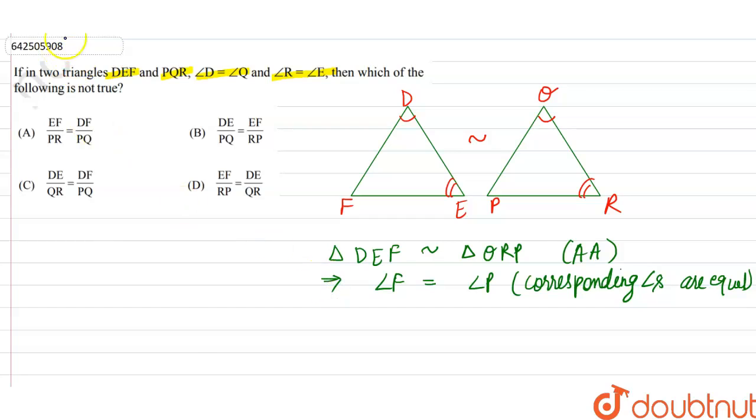Therefore we can say that angle F is equal to angle P. Now from this, if two triangles are similar and their angles are equal, therefore the corresponding sides are proportional to each other. We can say that DF upon QP is equal to FE upon PR, is equal to DE upon QR.